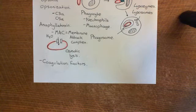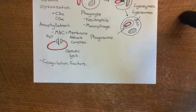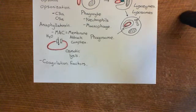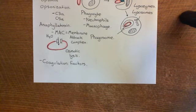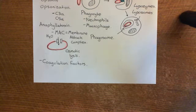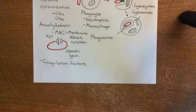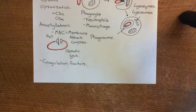The fibrin meshwork intertwines amongst the pathogenic cells or pathogenic structures and contains them, because they literally can't escape from it. This stops the spread of the pathogen further — the fear being that it could spread into the blood. So the coagulation factors are trying to prevent that from happening.